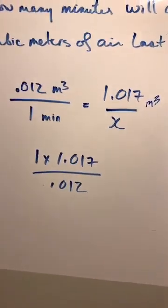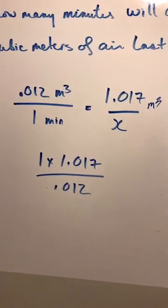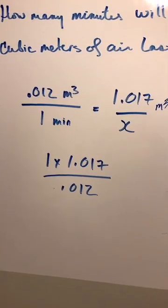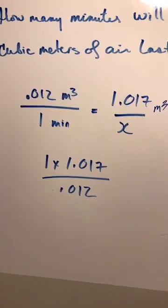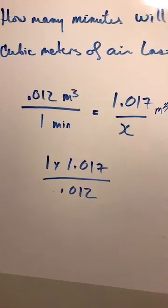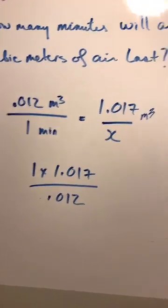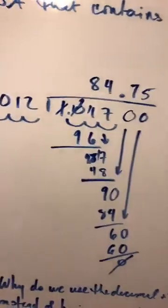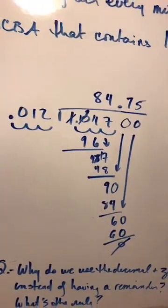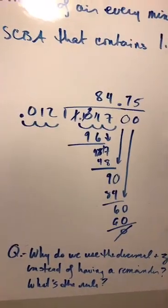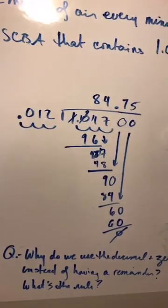So that boiled down to 1 times 1.017 over 0.012 or moving forward 1.017 divided by 0.012.